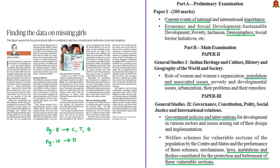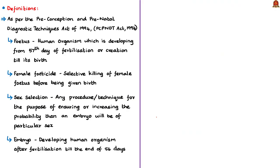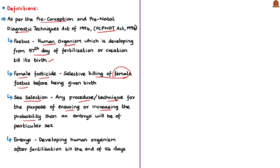This editorial discusses female feticide. As per the Preconception and Prenatal Diagnostic Techniques Act of 1994, in short the PCPNDT Act of 1994, a fetus means a human organism developing from the 57th day of fertilization till its birth. Feticide means killing of a fetus, and female feticide means selective killing of female fetus before birth. Under this act, sex selection includes any procedure or technique for the purpose of ensuring or increasing the probability that an embryo will be of a particular sex. The term embryo means a developing human organism after fertilization till the end of the 56th day.